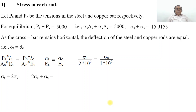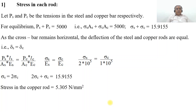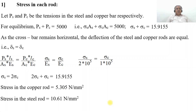Substituting sigma_S = 2·sigma_C into 2·sigma_C plus sigma_C equals 15.9155: 3·sigma_C equals 15.9155, therefore stress in the copper rod sigma_C equals 5.305 N/mm². Stress in the steel rod is 2·sigma_C, that is 2 × 5.305, therefore sigma_S equals 10.61 N/mm².